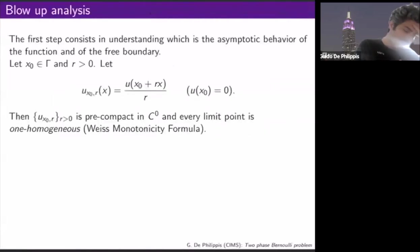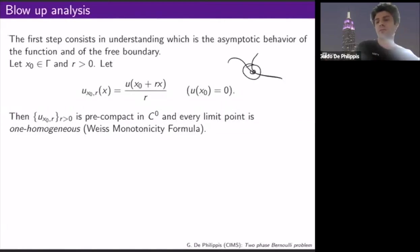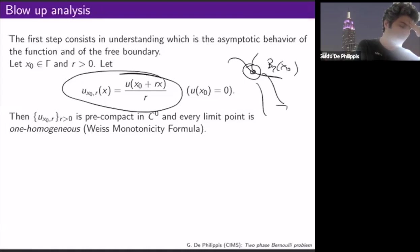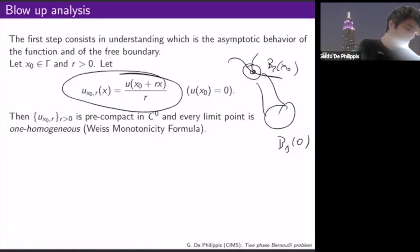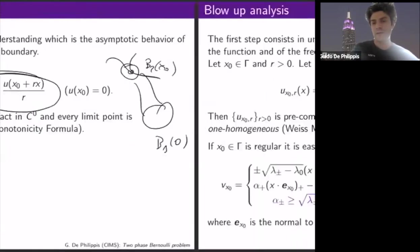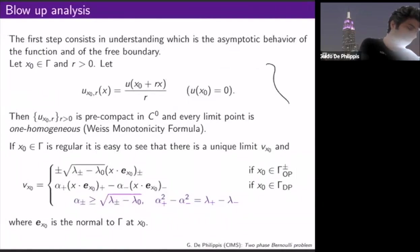Now we perform the blow-up analysis. We take a point on the free boundary and zoom around it by considering the scaling U_r(x) = U(x_0 + rx) / r. This family is still a minimizer for the scaled functional. From Lipschitz regularity, these functions are precompact, and any limit is a one-homogeneous function — that's the key fact coming from Weiss's monotonicity formula.